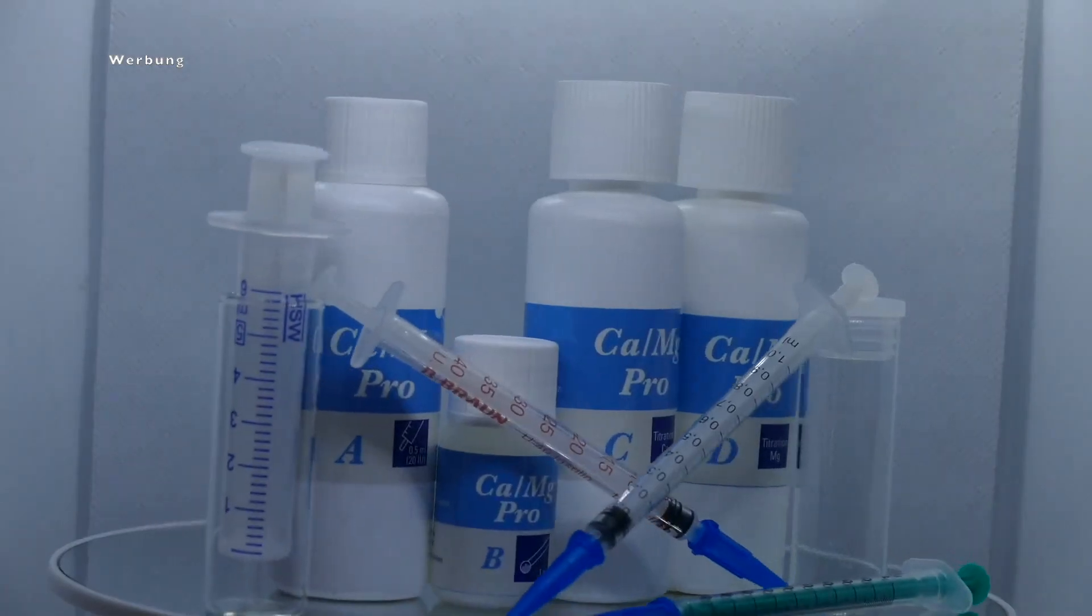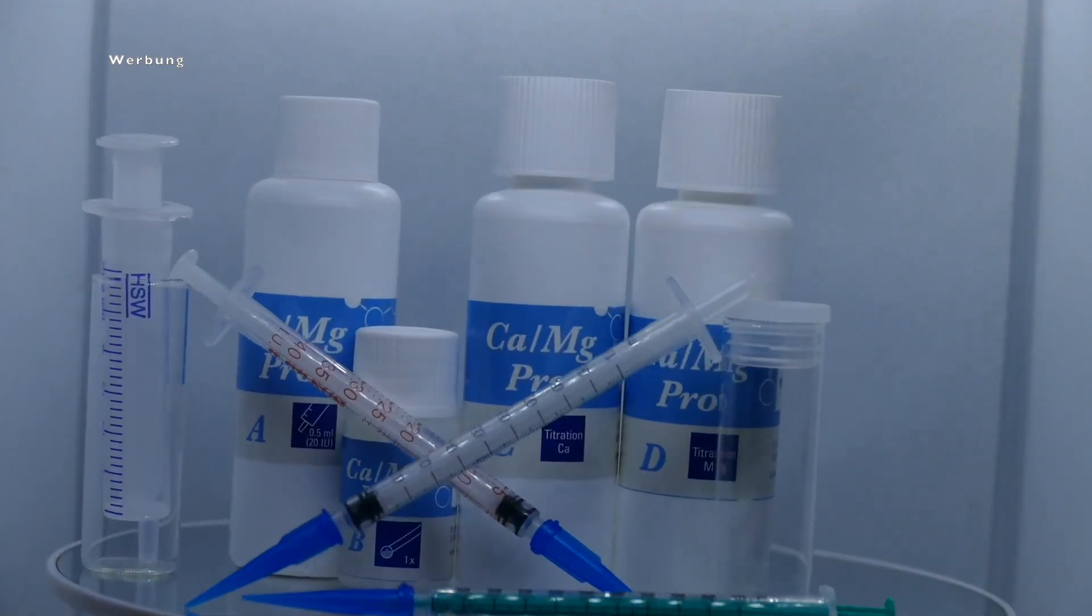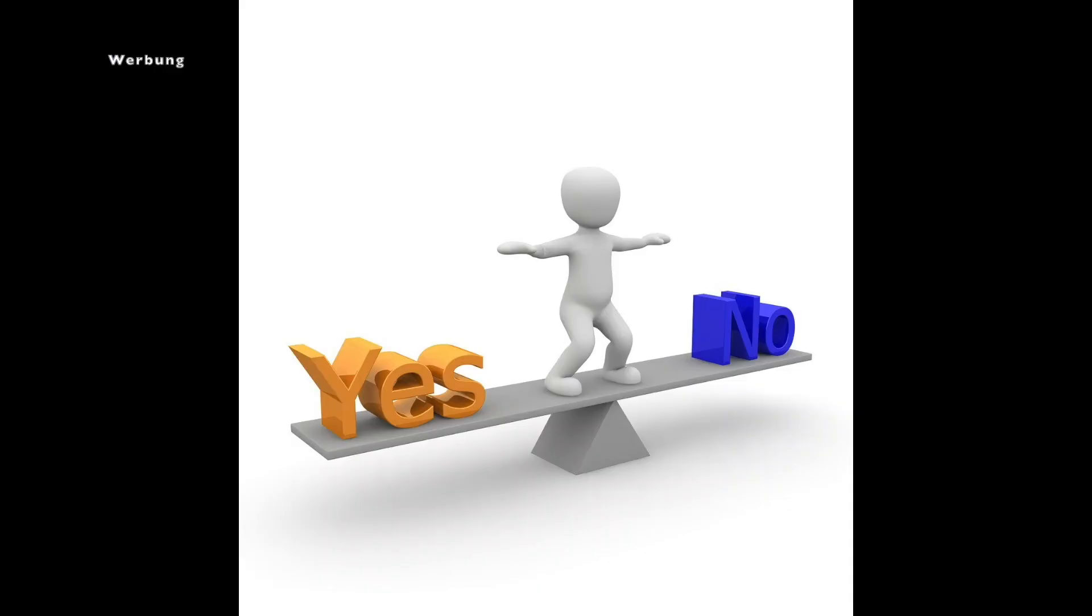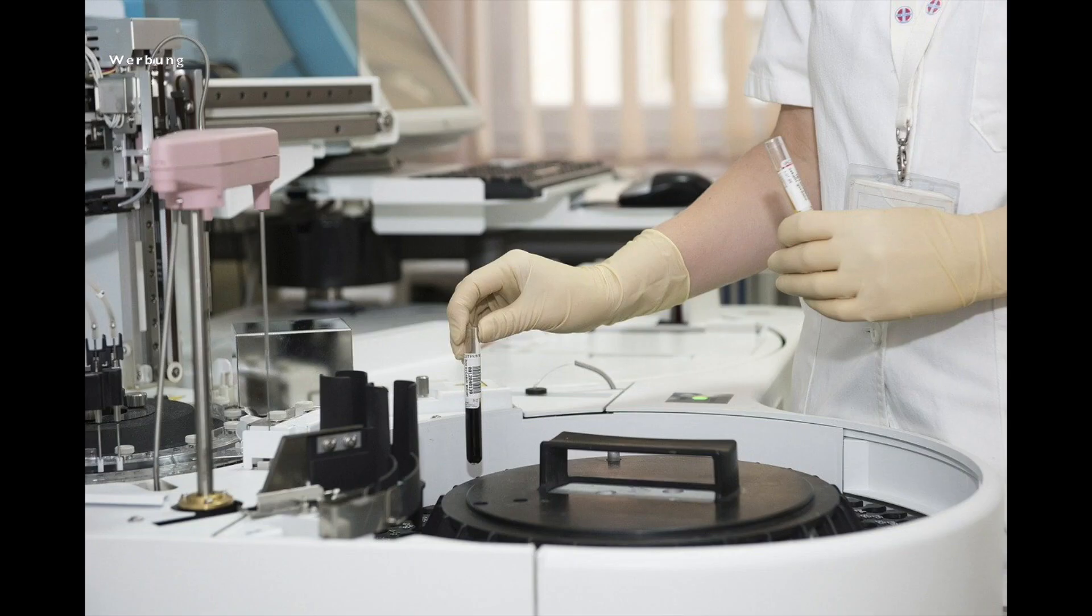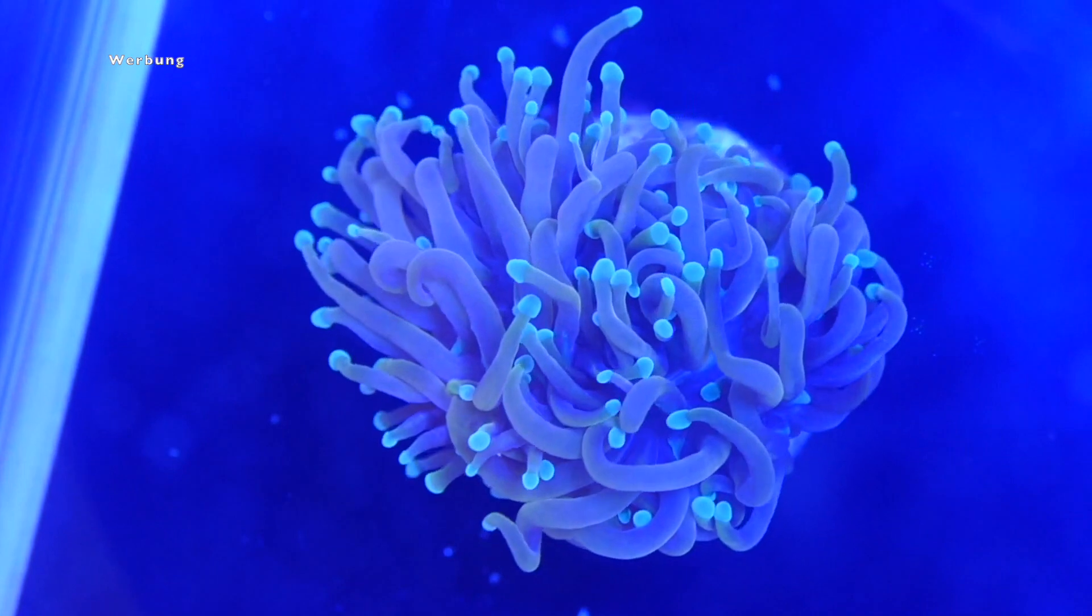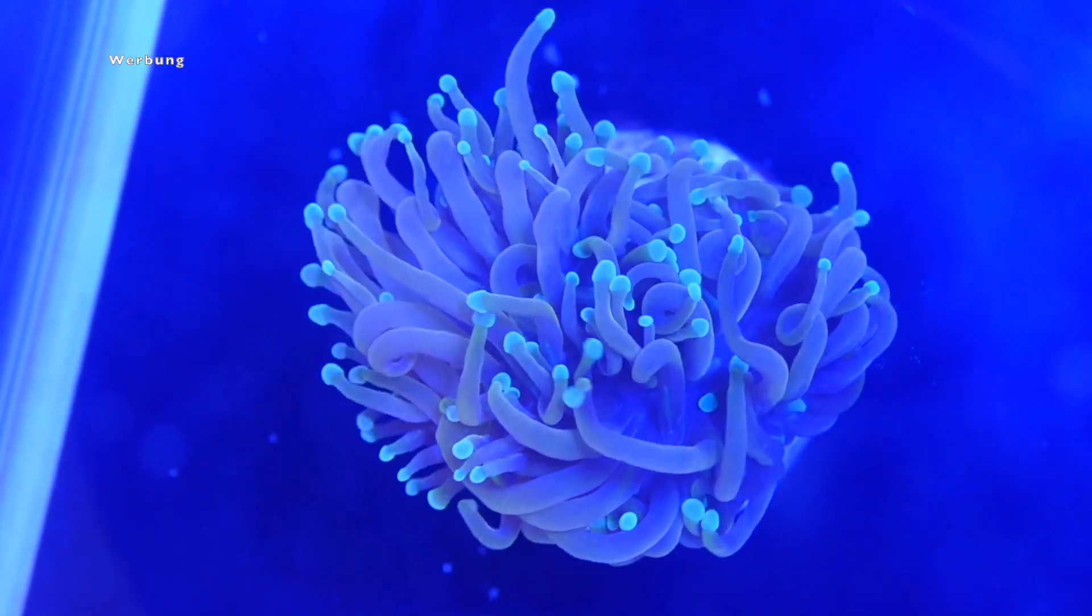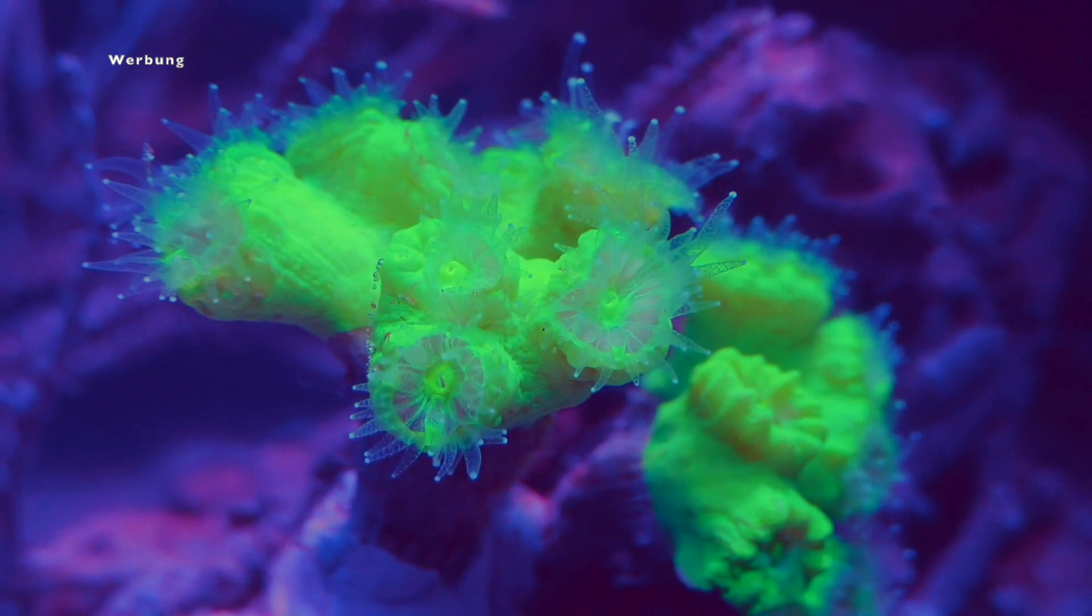So today we are talking about calcium and magnesium. We will discuss the optimum ranges for these values and what measures can be taken to correct them if our test falls outside of these recommended values. Since people always ask about which products can be used to correct values if something needs adjustment, I will show you the corresponding products by Tropic Marin which can be used as a countermeasure and of course link everything in the video description.